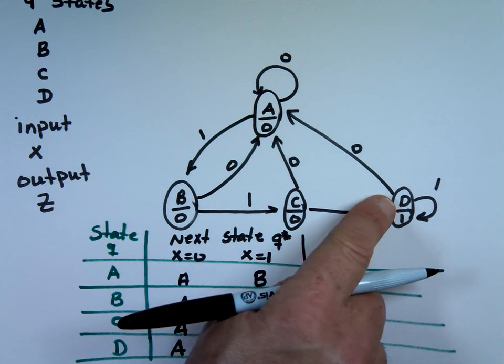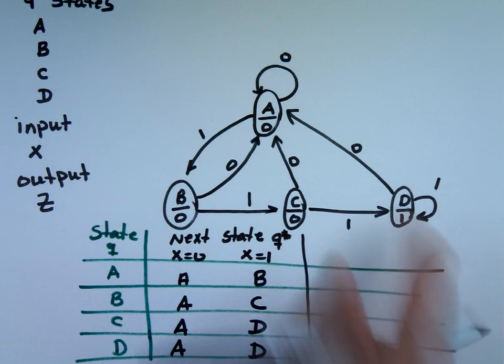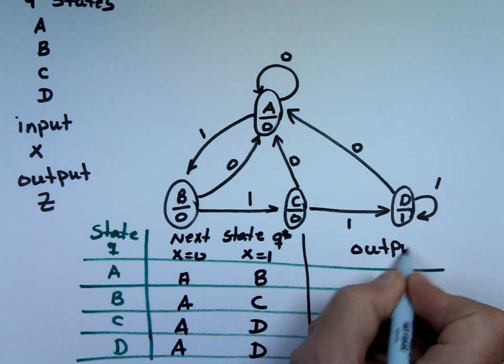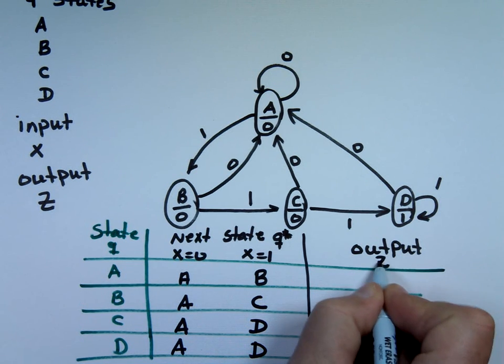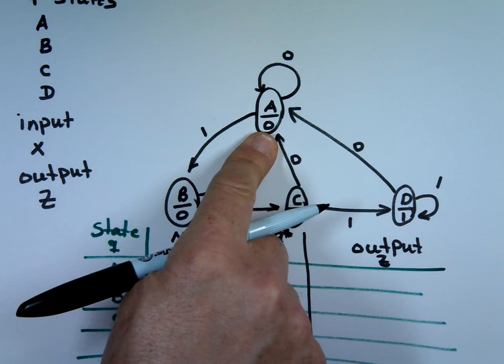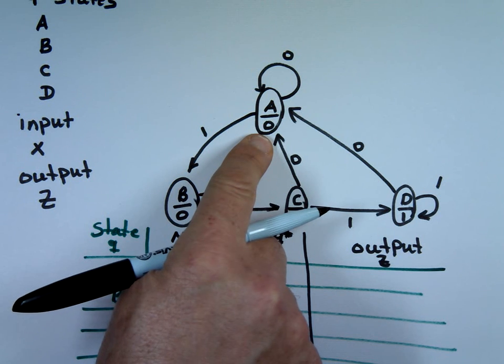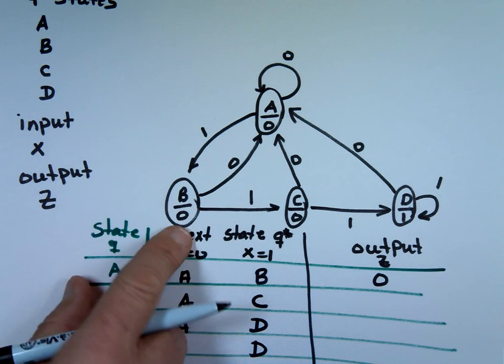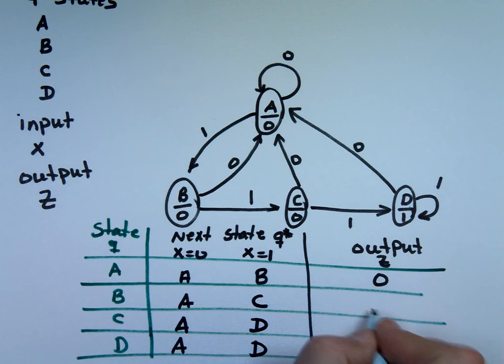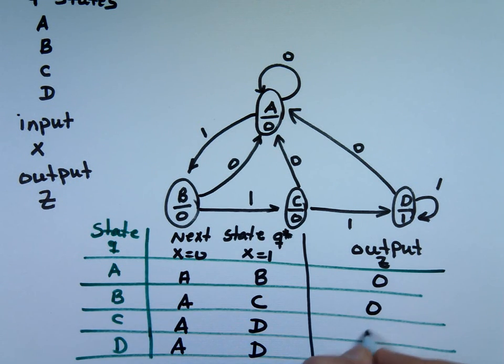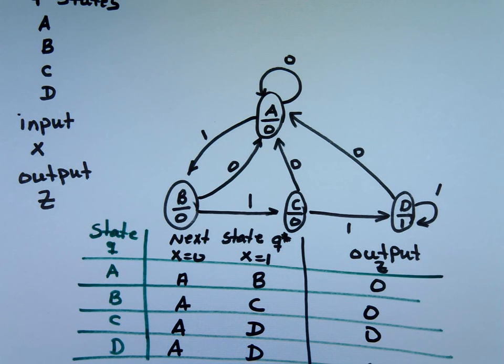And the way this is drawn actually, your output, it doesn't matter what the input is. We'll call that Z. If you're state A, what's your output here? 0 is 0, right? If you go to state B, what is your output? 0. If you're state C, what's your output? 0. And if you're state D, what's your output? 1.